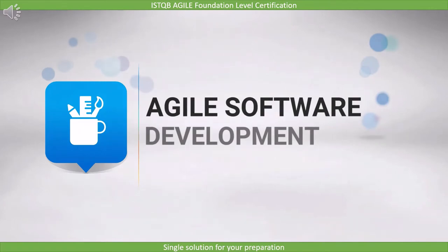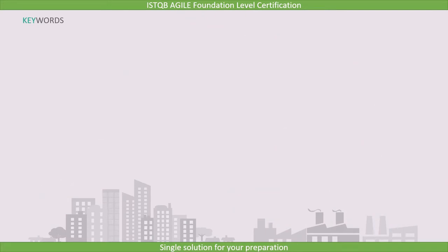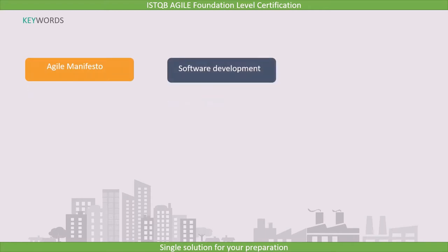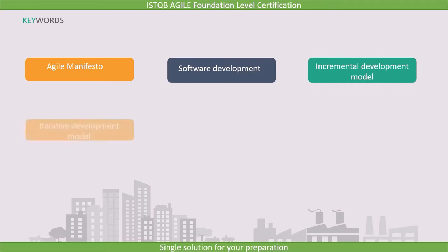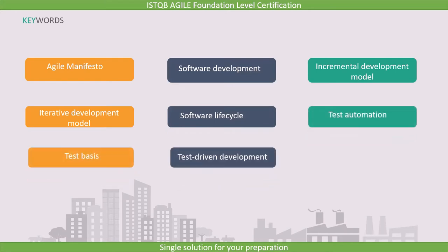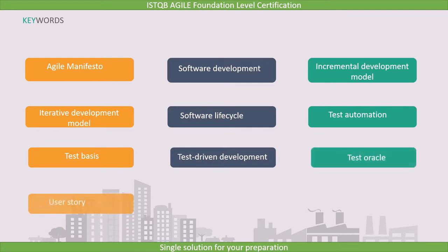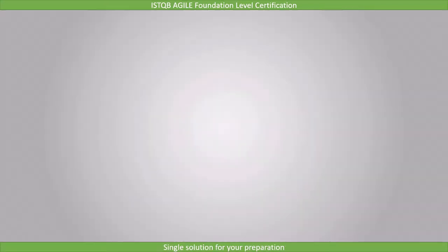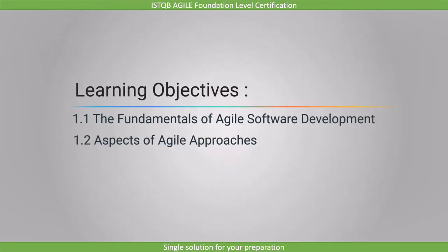The first chapter is Agile Software Development. This introductory lecture outlines what we will learn. The key keywords to know are: Agile Manifesto, Agile Software Development, Incremental Development Model, Iterative Development Model, Software Lifecycle, Test Automation, Test Basis, Test Driven Development, Test Oracle, and User Story — 11 keywords in total. There are two learning objectives: covering the fundamentals of Agile Software Development and exploring the different aspects of Agile approaches.